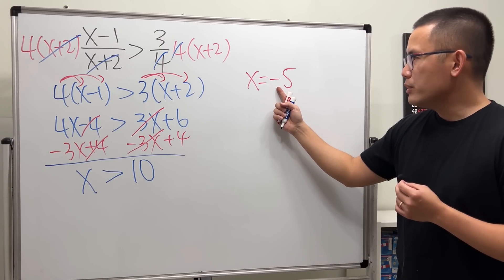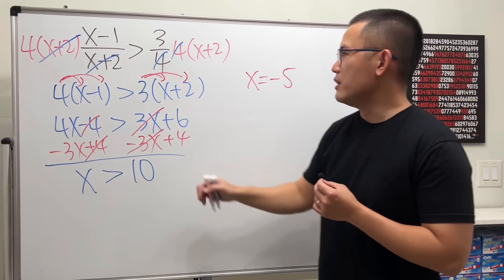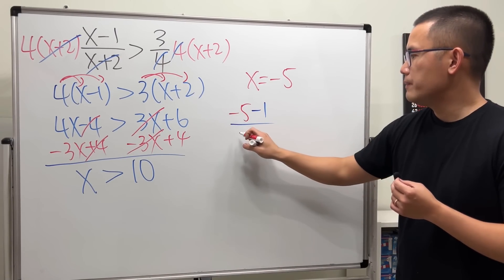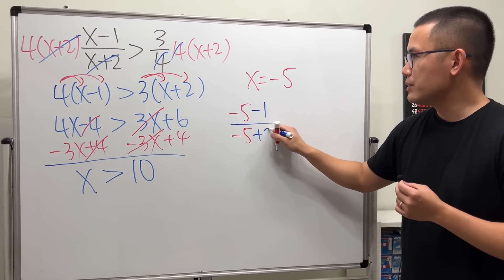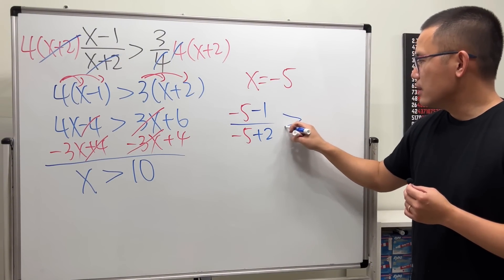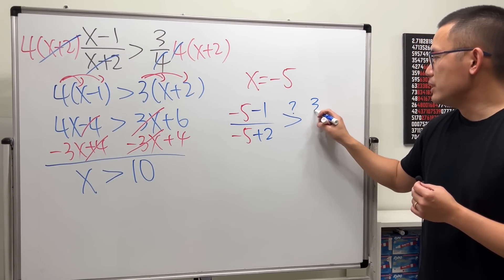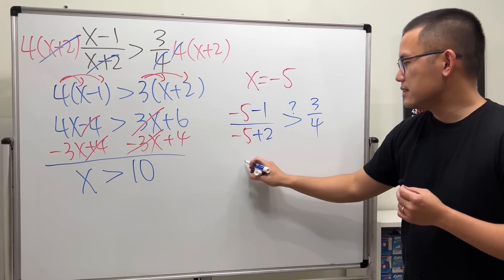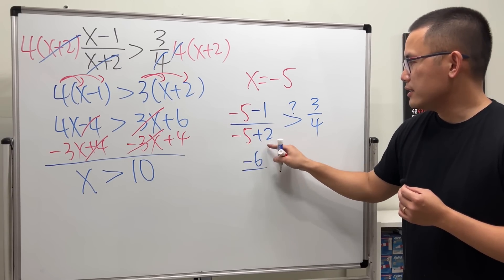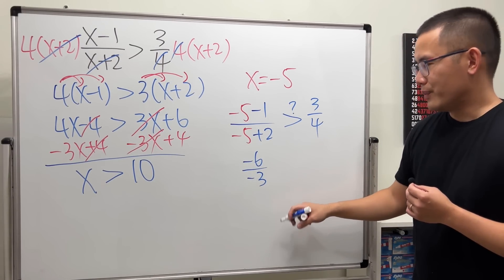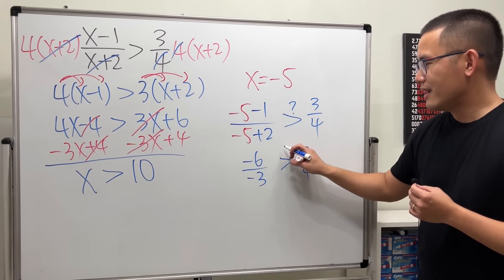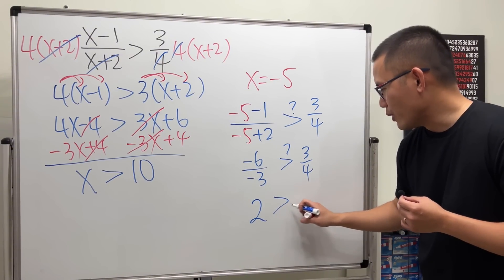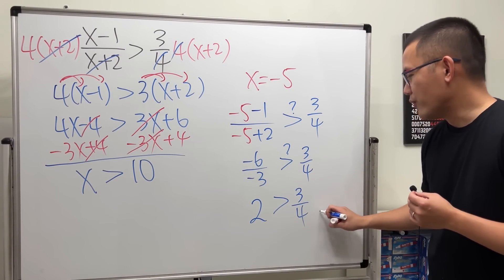If we put negative 5 in, we get negative 5 minus 1 over negative 5 plus 2. Is this also greater than 3 over 4? That gives us negative 6 over negative 3. Is that greater than 3 over 4? Yes — it equals 2, which is greater than 3 over 4.